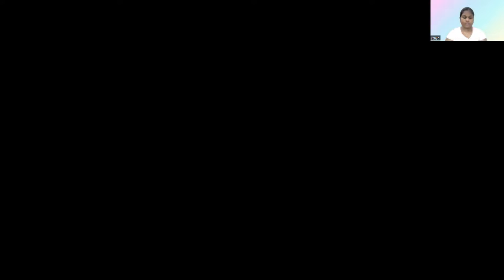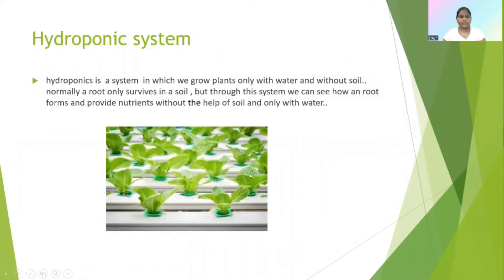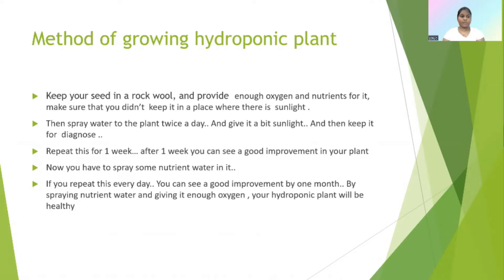Hello everyone, my name is Jennyan, and today I'm going to present a topic called hydroponics. Hydroponics is a system in which we grow plants only with water and without soil. Normally a root can only survive in soil, but through this system we can see how a root forms and provides nutrients without soil. To grow a hydroponic plant: keep your seed in a rock pool and provide enough oxygen and nutrients, ensure it is not kept in direct sunlight, then spray water to the plant twice a day and give it a bit of sunlight.